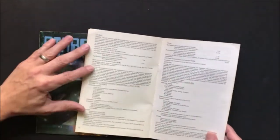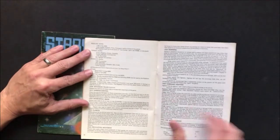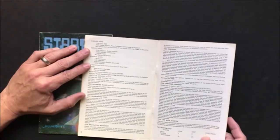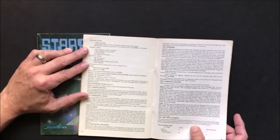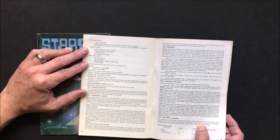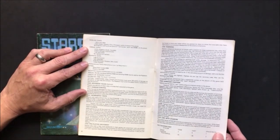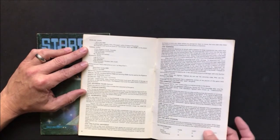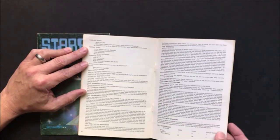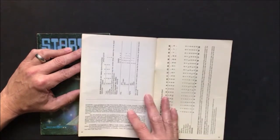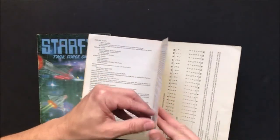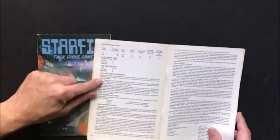The original game Starfire includes provisions for constructing your own ships. It tells you how much space is required for each system and everything, so when you do build your ships.